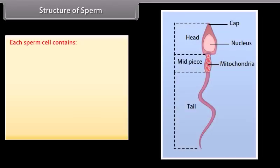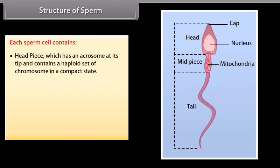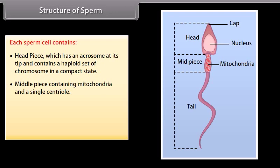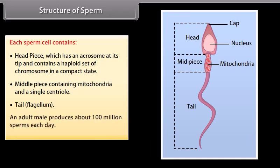Structure of sperm: each sperm cell contains a headpiece, which has an acrosome at its tip and contains a haploid set of chromosomes in a compact state; a middlepiece containing mitochondria and a single centriole; and a tail or flagellum. An adult male produces about 100 million sperms each day.